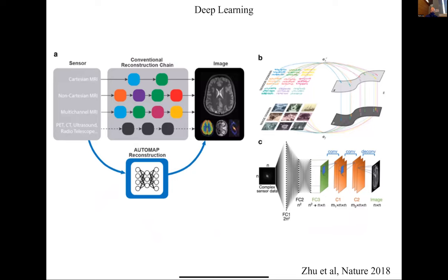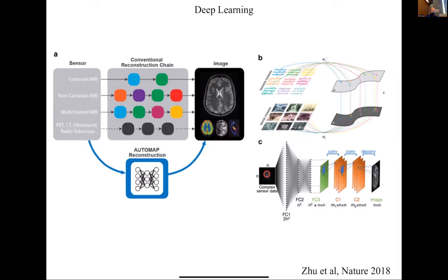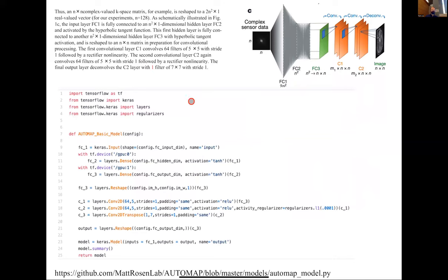That gets us to deep learning. One of the first high-profile papers on this appeared in Nature in 2018. The idea is: instead of learning all the details of MRI physics, CT, and so on, you just let the computer figure it out. You take your data, put it through fully connected layers and convolutional layers, deconvolve it, and end up with your image — it's almost like magic. With TensorFlow, Google has made it so easy to implement that even high school students have done it.